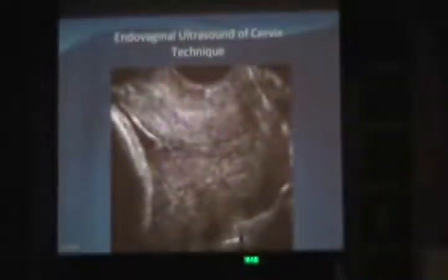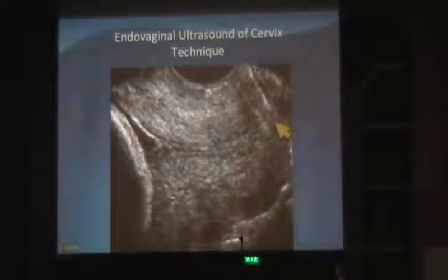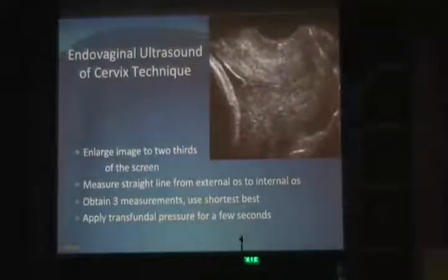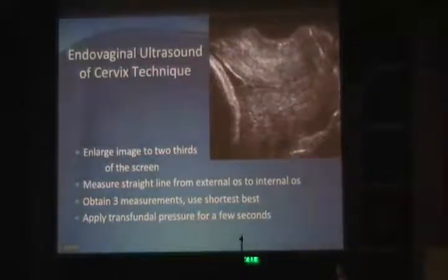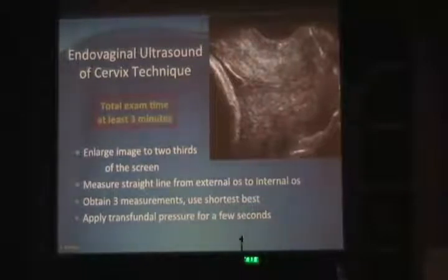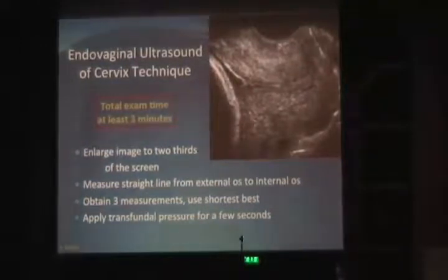As you can see in this picture, here is the internal os and here is the external os. You want to make sure you don't put too much pressure on the cervix. Enlarge the image as much as you can, then obtain at least three different measurements and use the shortest, best measurement that gives you a view of the whole cervix. The total examination of the cervix should last at least a few minutes, because over that time you may detect spontaneous changes with contractions.